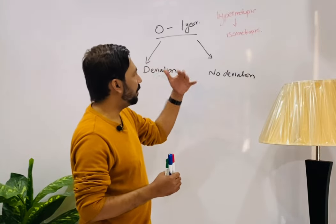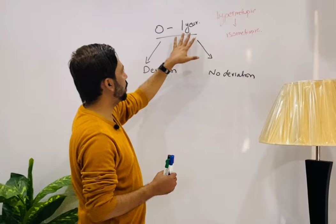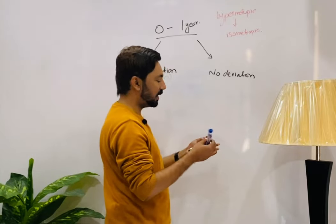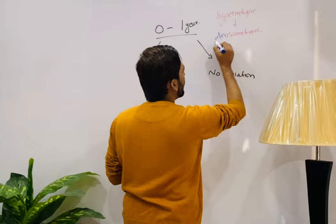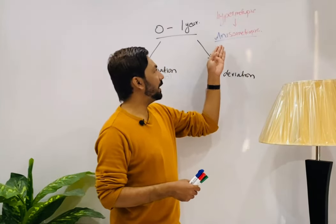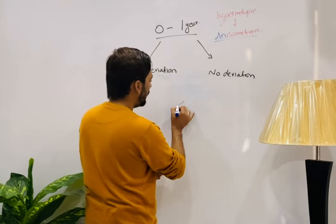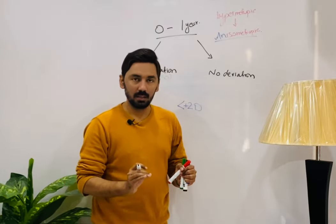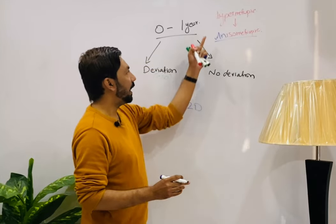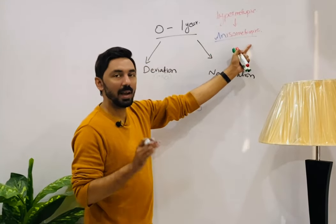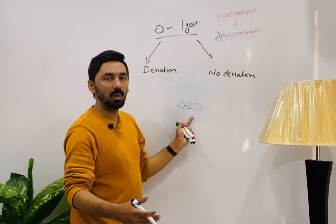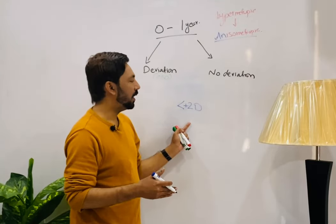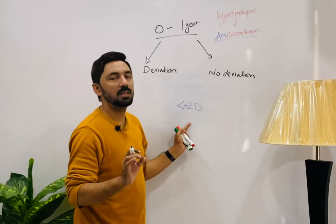Now let's discuss anisometropic hypermetropia in the same age group — zero to one years. Now the patient has hypermetropia but the refraction in both eyes is different — anisometropia. If the anisometropia is less than two diopters — for example 1, 1.5, or 2 — there is no need to prescribe any glasses.